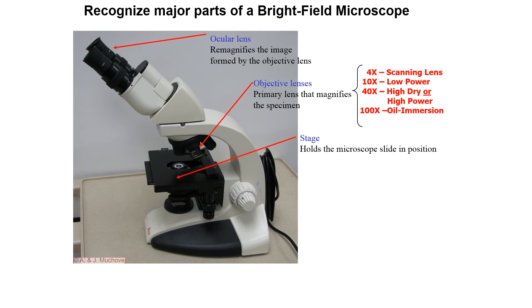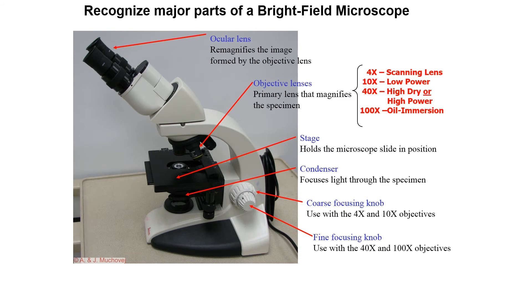There is a stage that holds the microscope slide in position so that it can be observed. We have the condenser that focuses the lens through the specimen and we have the coarse focusing knob which we use with the lower powers. They allow us to get the material in focus and when we have it in focus with the lower powers we use the fine focusing knob to look at it with the higher powers. The fine focusing knob makes the stage travel shorter distances and therefore it's easier to get everything into focus.